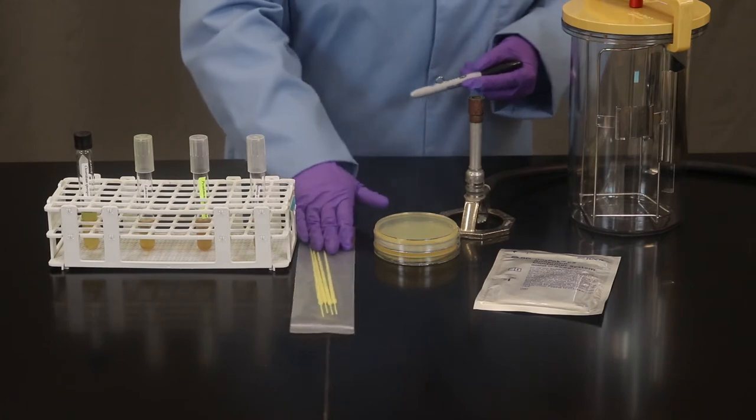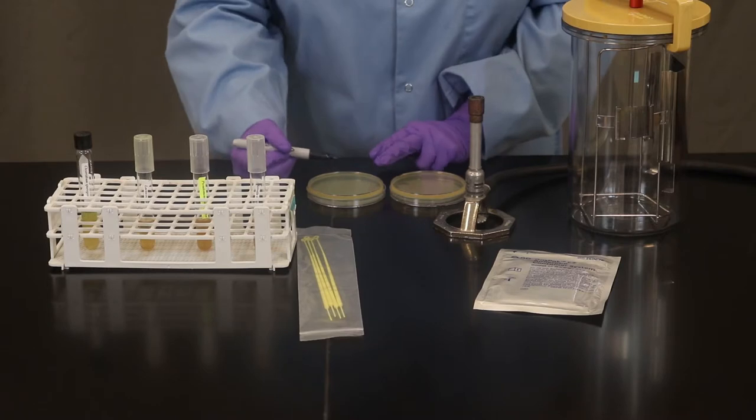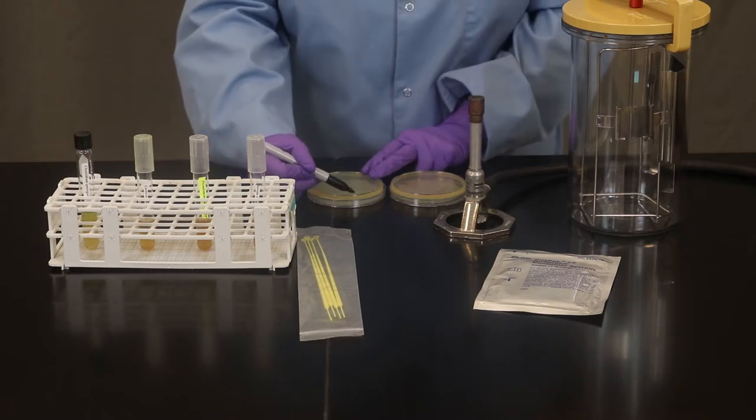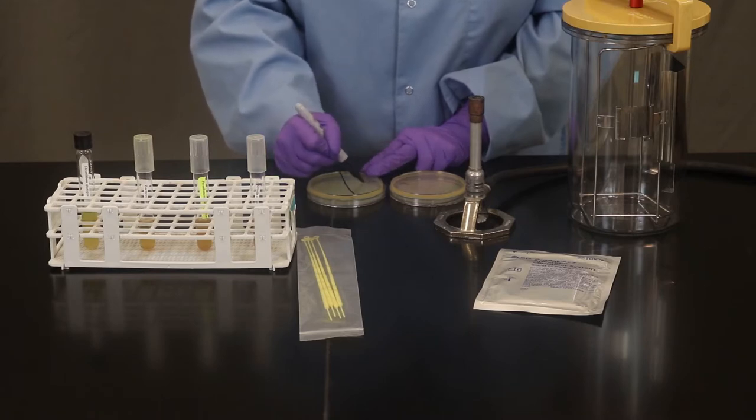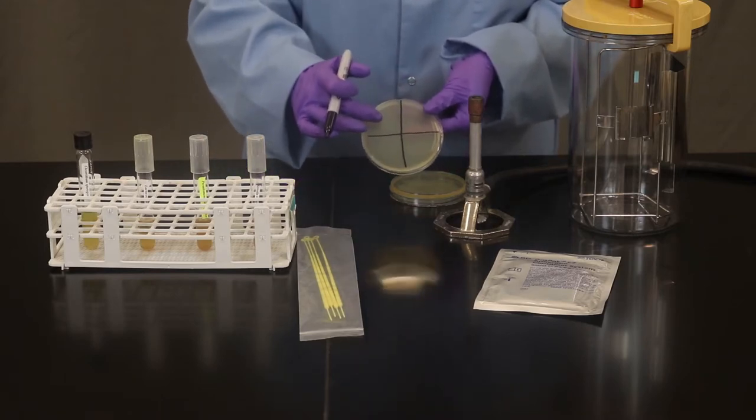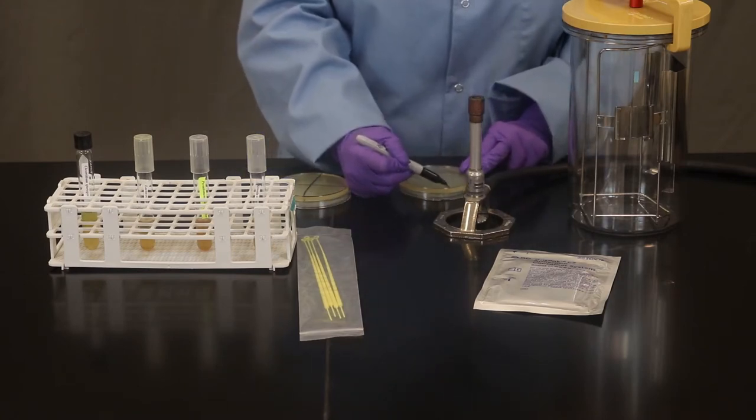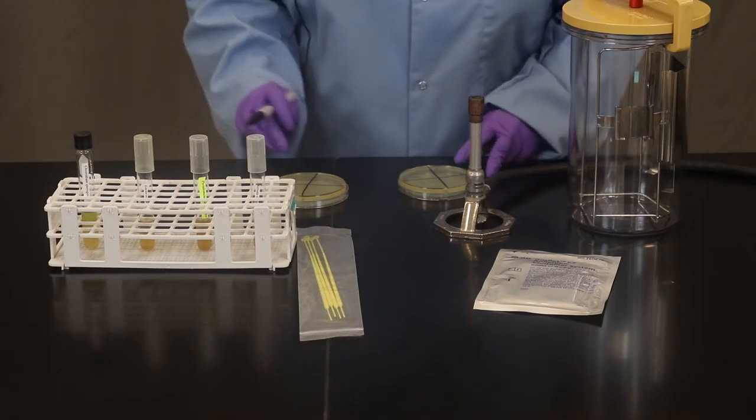Before we get started we're going to label our petri plates as follows. We're going to create four quadrants on our petri plate. So I'm going to create a big T essentially with four quadrants here on each plate. You can use a ruler if you want.